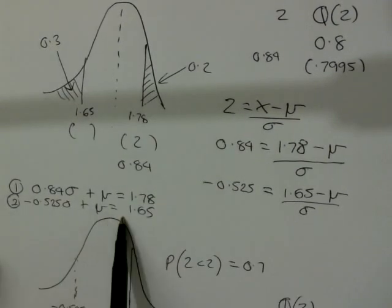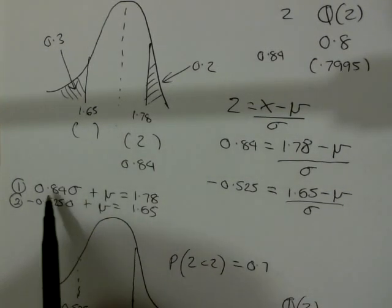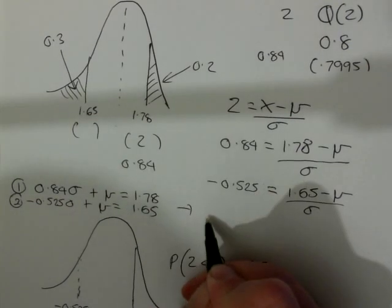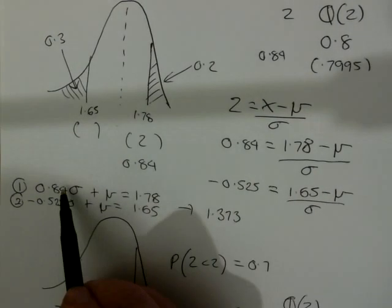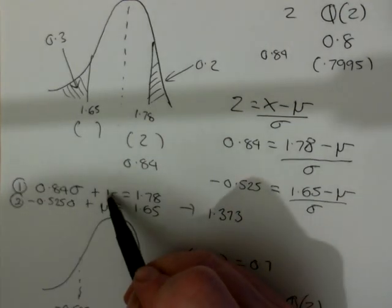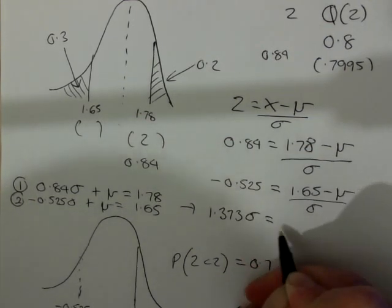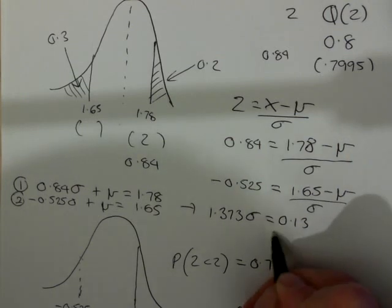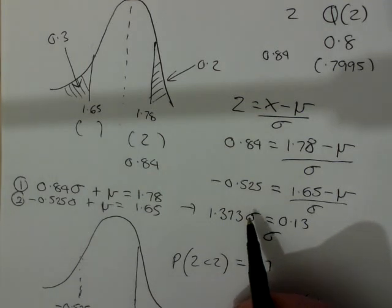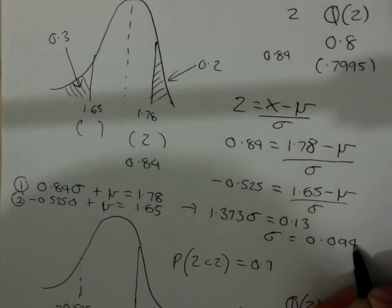So, I now need to solve these two simultaneous equations to find the values of mu and sigma. If I do a subtraction, I'm going to get 0.84 minus minus 0.525, and that's going to give me 1.373 sigma. The mu's by subtraction will disappear. And 1.78 subtract 1.65 equals 0.13. So, sigma will equal 0.13 divided by 1.373, and you will find that that will come to 0.0947.